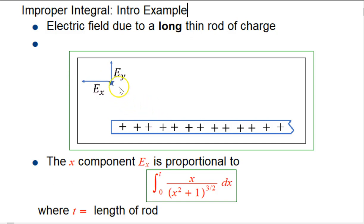It's going to have an x component and a y component, and it turns out that if you just focus on that x component, it's going to be proportional to an integral. I'm going to take out all the physical constants, but it's going to be an integral of x over (x squared plus one) to the three halves, basically along the rod from zero to wherever the rod ends, t. So t is going to be the length of the rod.